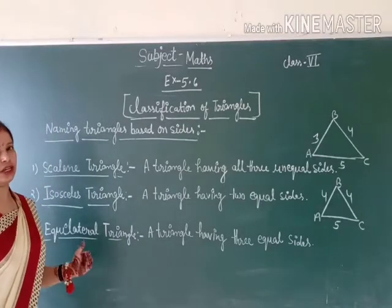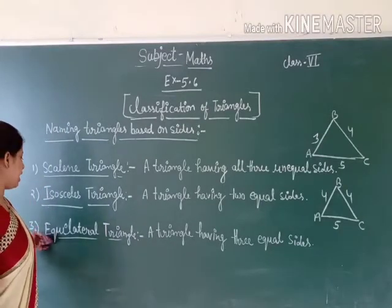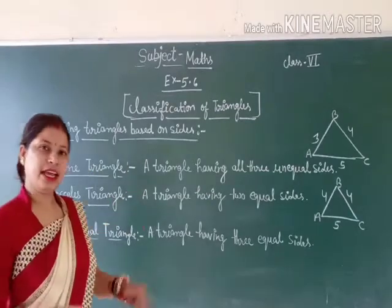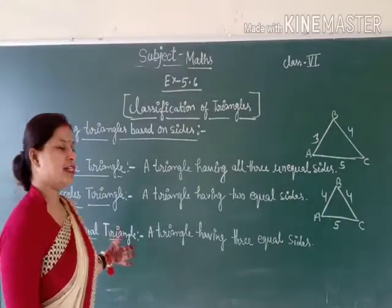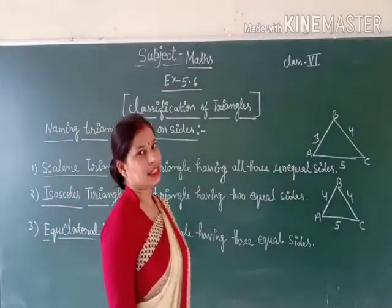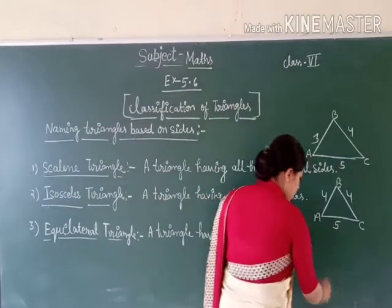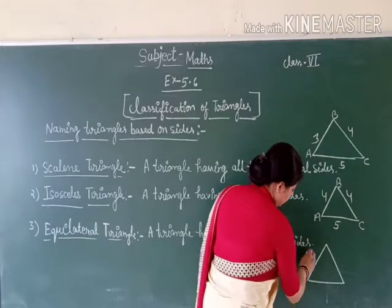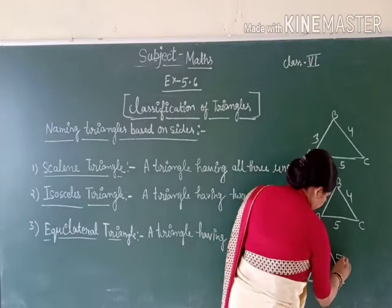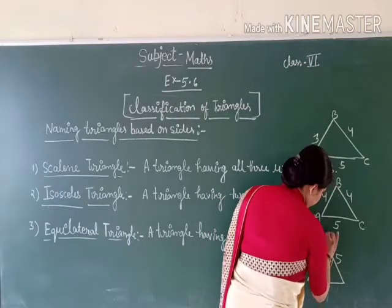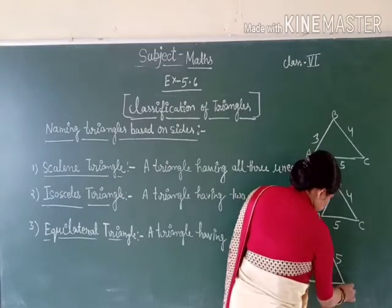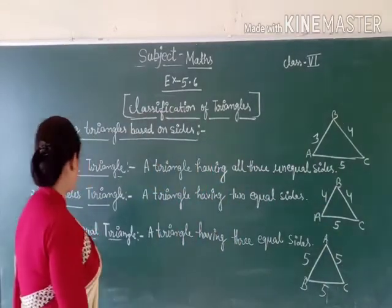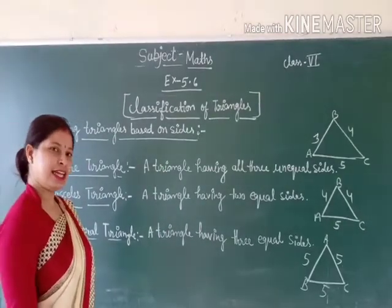Now the third is the equilateral triangle. From the name itself — equilateral — it means a triangle having all three sides equal. For example, sides of 5, 5, and 5. This triangle's three sides are equal, so this triangle is known as an equilateral triangle.